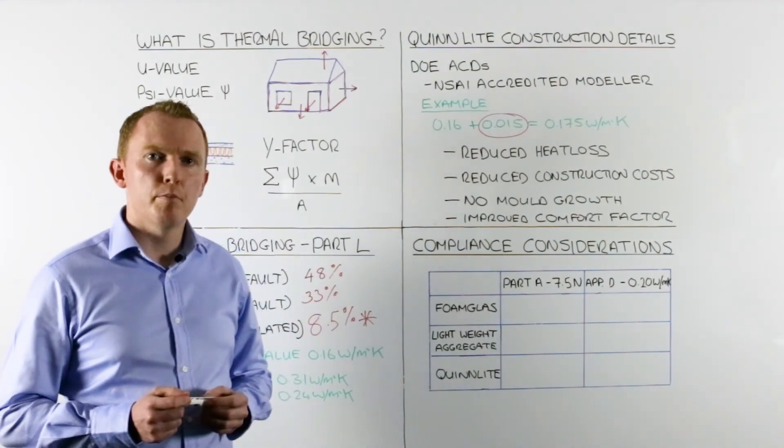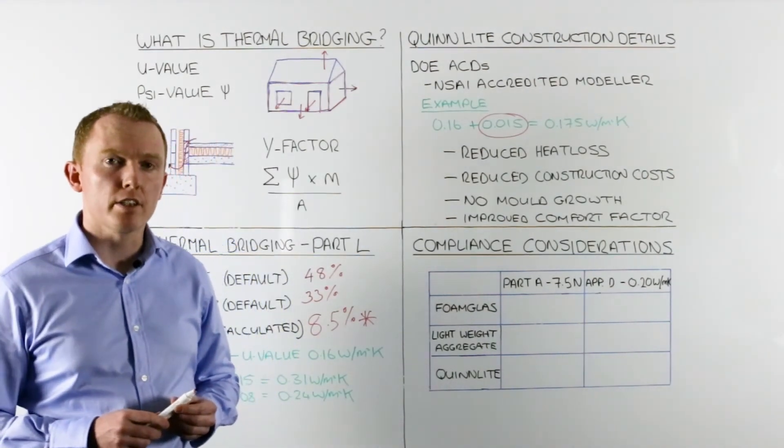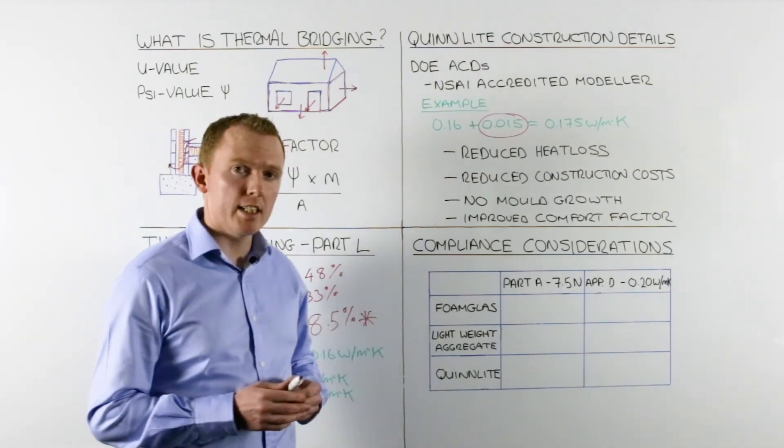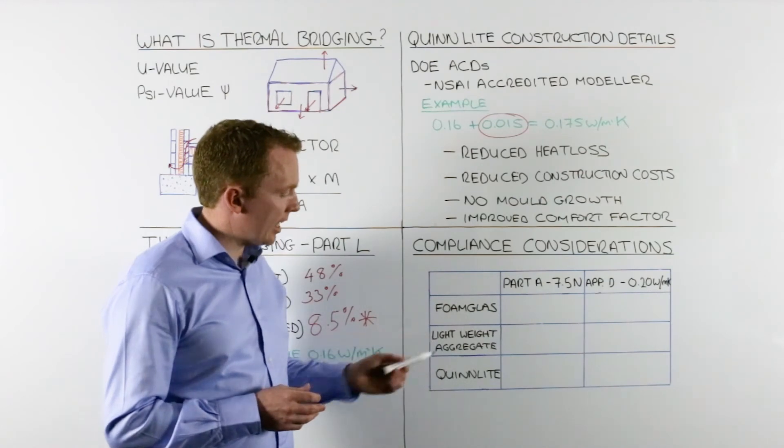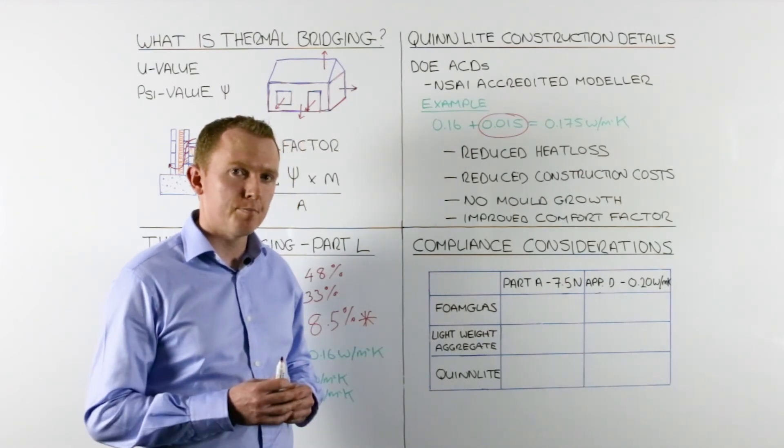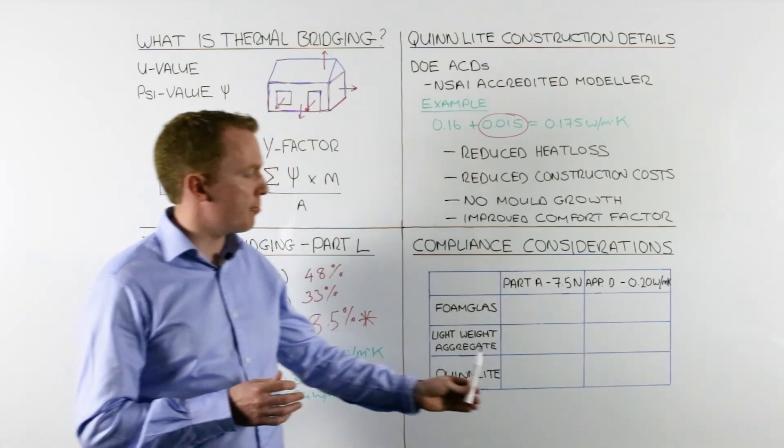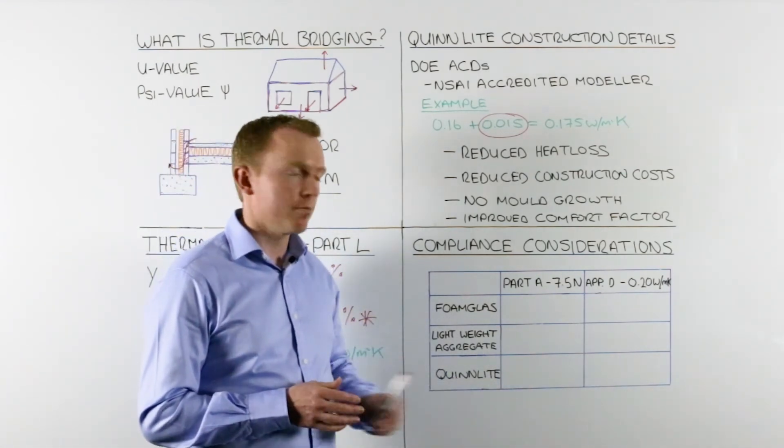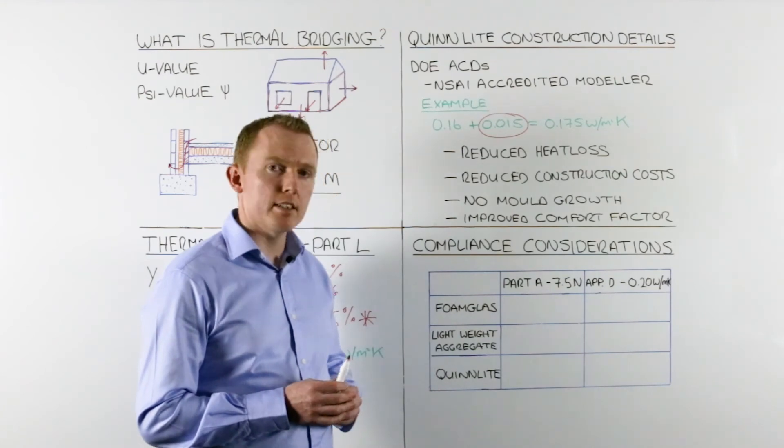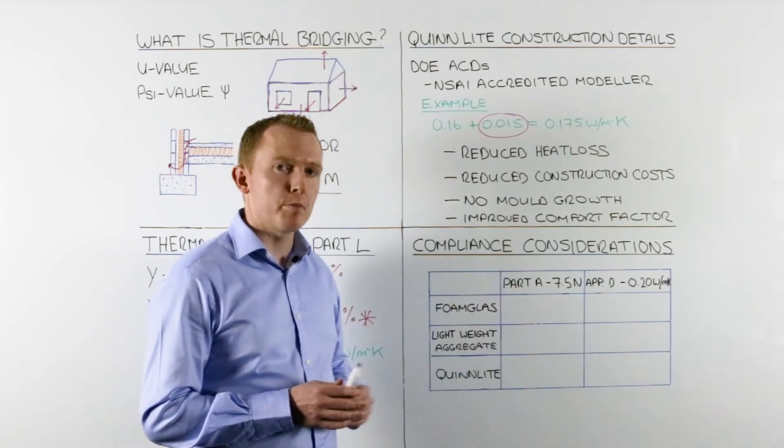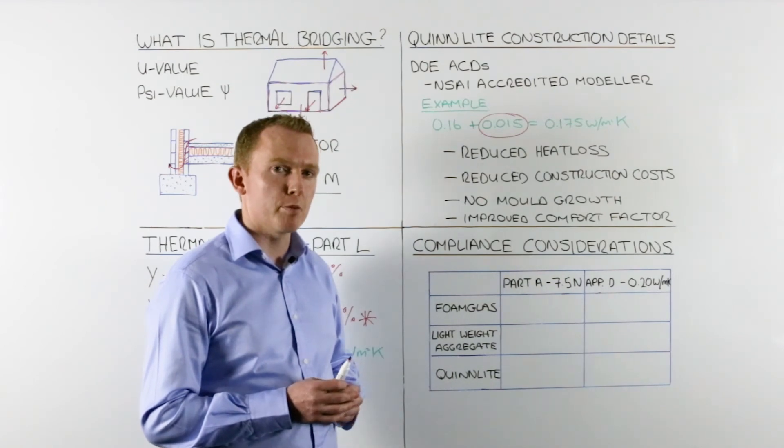So how does Quinlite compare to the other alternatives on the market? The main alternatives being foam glass and lightweight aggregate blocks or medium density blocks. Well, if we look at this firstly in terms of Part A structure, Part A states that blocks used in Ireland must have a minimum compressive strength of 7.5 newtons per millimeter squared.